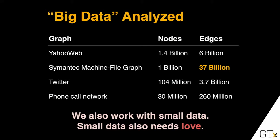Some example datasets we've analyzed are shown in this table. The largest is a graph from Semantic with over 37 billion machine-file relationships, where nodes are either machines or files, and an edge connects them if a machine has reported a file. I also like to make a small disclaimer — we not only work with large datasets, but also small ones. As my colleague John Stasko says, small data also needs enough. We work with both.